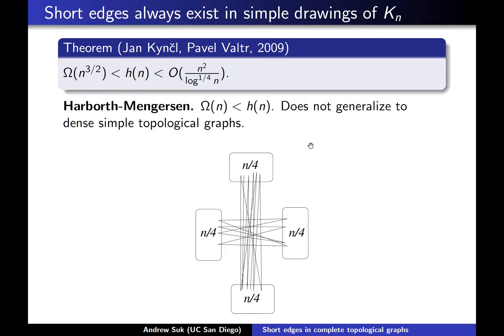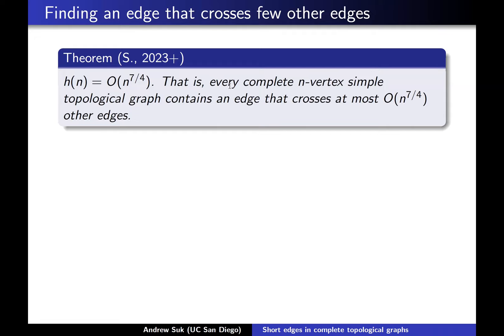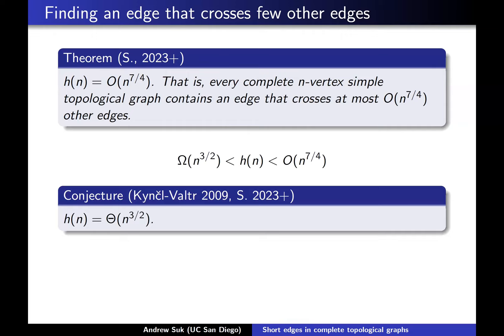What I wanted to talk about is that I was able to give a polynomial improvement to this upper bound. The new result I plan on talking about is that h(n) ≤ n^(7/4). In other words, in every complete n-vertex simple topological graph, there is some special edge that crosses at most n^(7/4) other edges. So assuming this is true, the best known upper and lower bounds for h(n) are somewhere between n^(3/2) and n^(7/4).